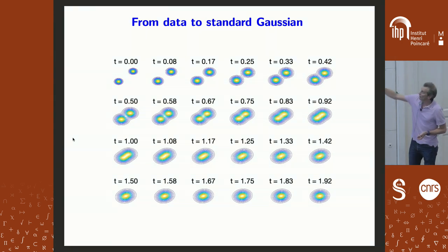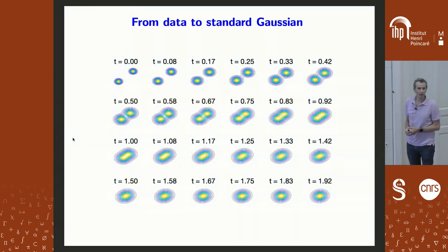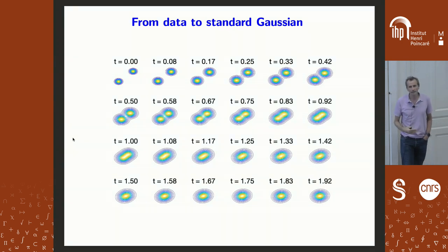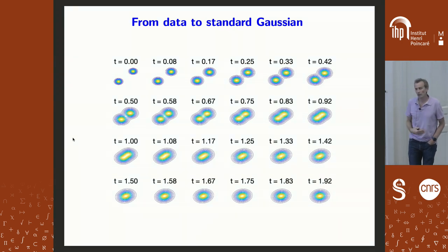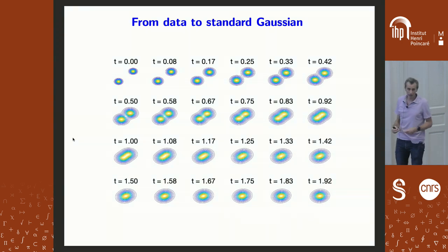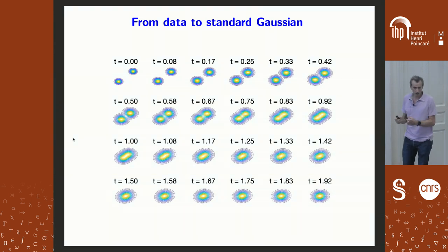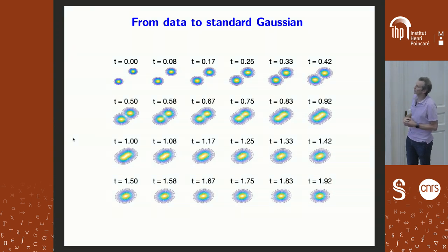What we're going to do is not denoise directly from the Gaussian back to the complex distribution as we did before. We're going to move slowly and denoise step by step until we end up at the clean distribution. This is progressive denoising — all the steps of this progressive denoiser will be easy and stable, giving overall stability. The idea is the same: add noise to get to something very simple, a Gaussian, which is easy to sample. Then progressively denoise the samples as we go along.